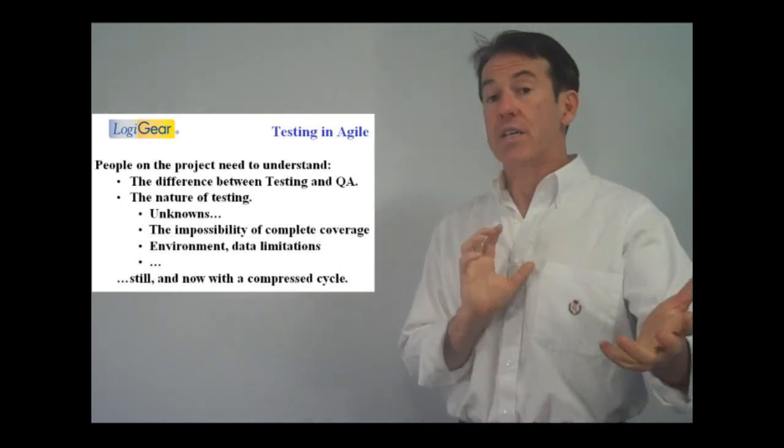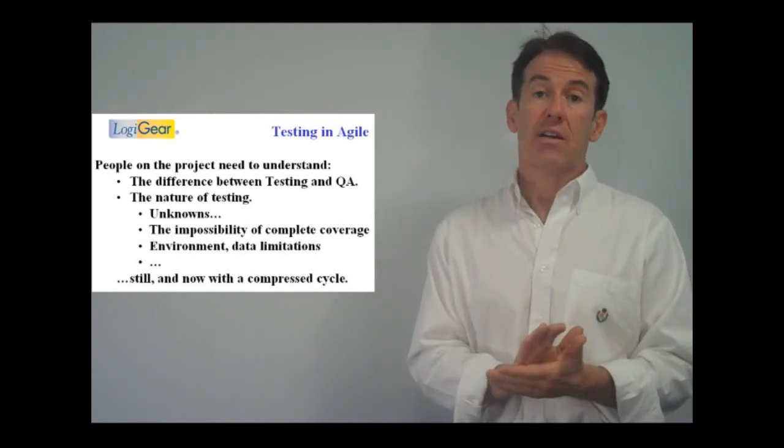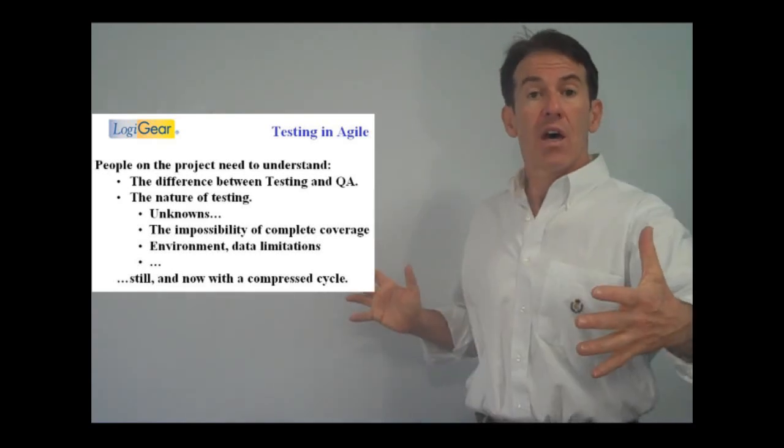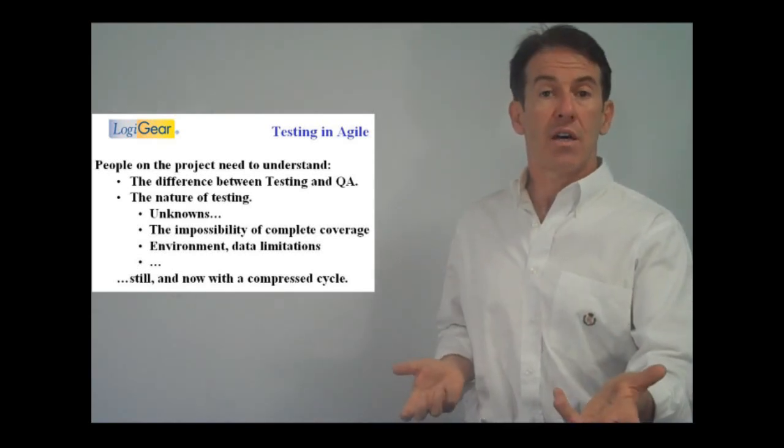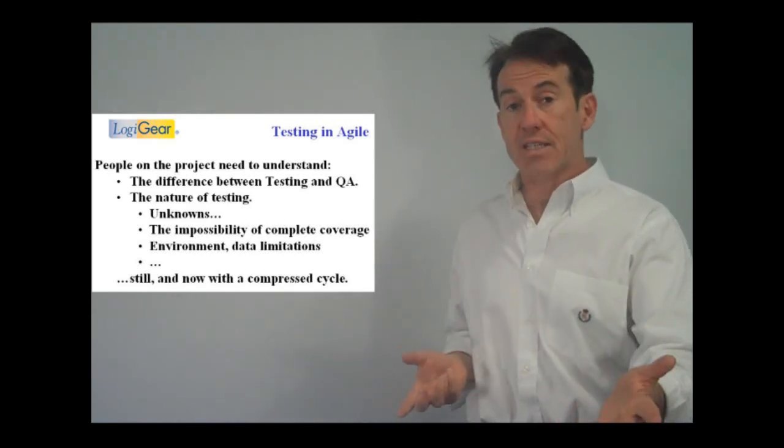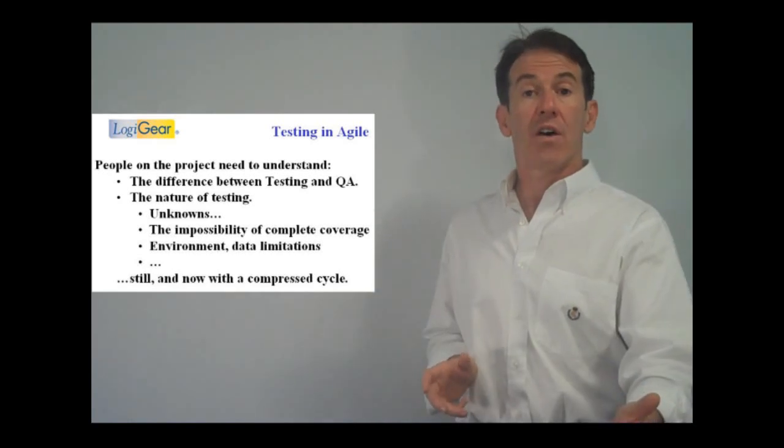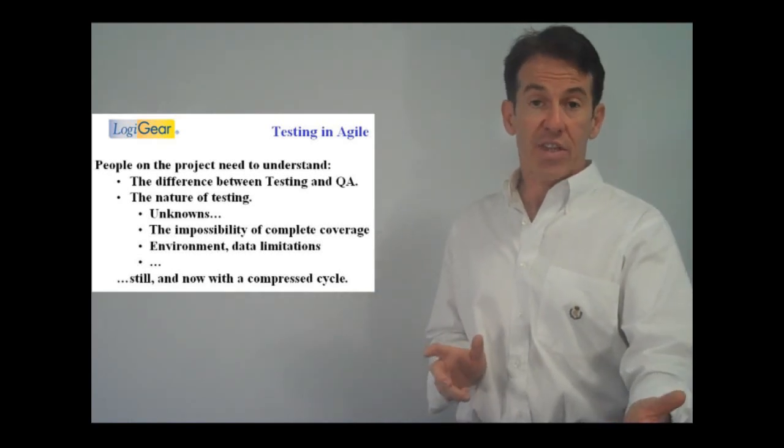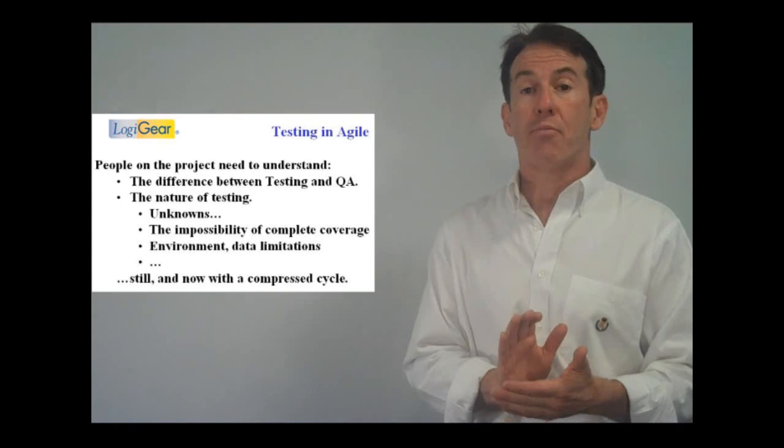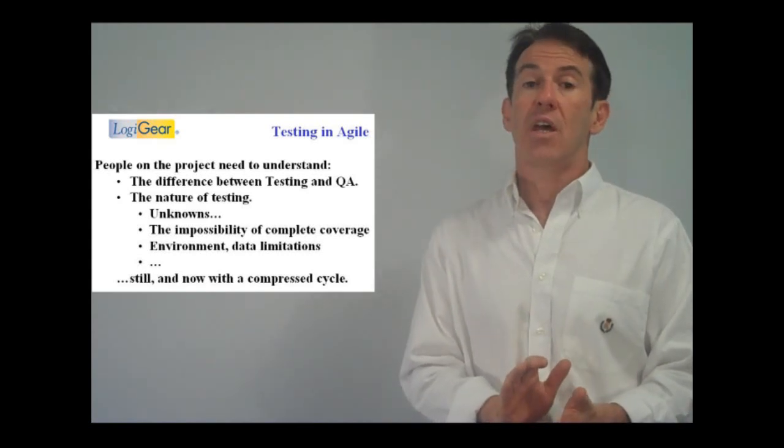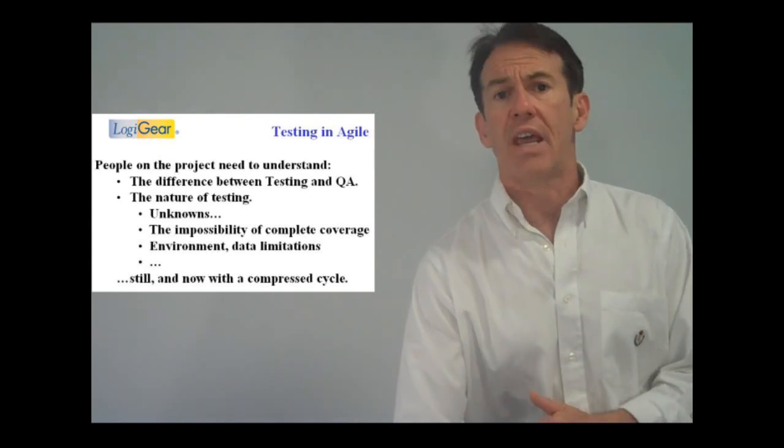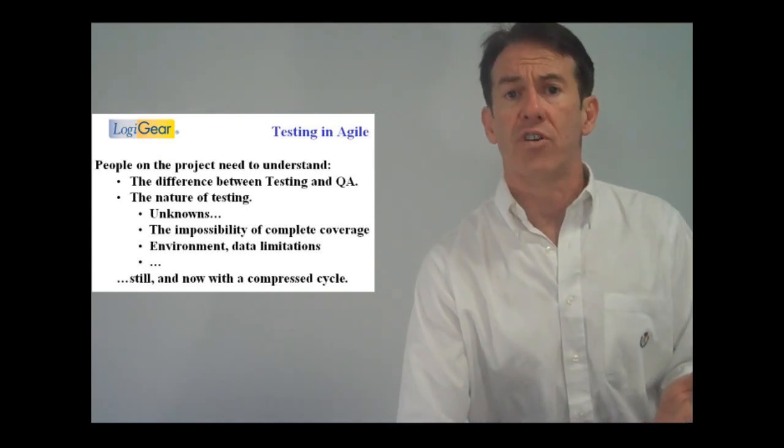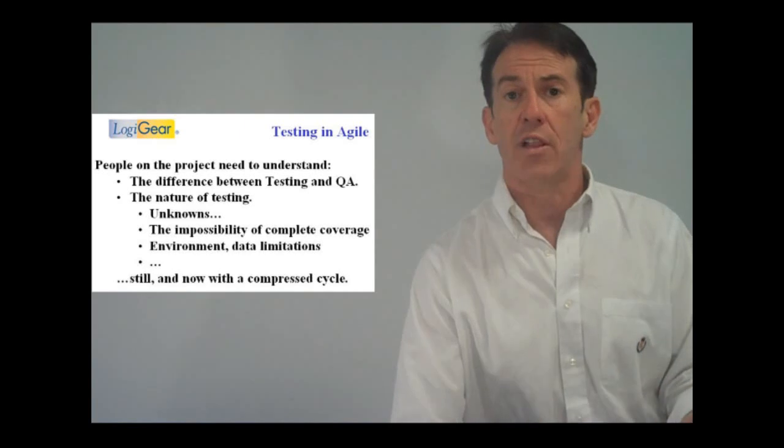So especially now that we're in a severely compressed cycle. If we used to have months and had more liberty, we still couldn't do complete testing and that fake notion of complete testing, of testing everything. But now that we're in such a more compressed development environment, our coverage is going to be just so much dramatically lower that we will just never be able to reach the levels of coverage that we had in longer development cycles.